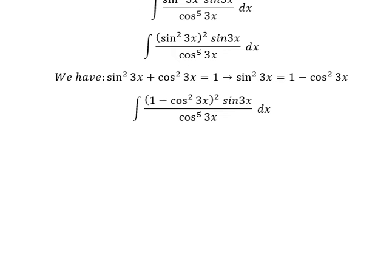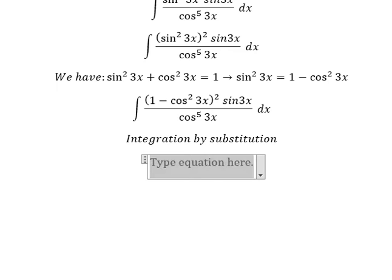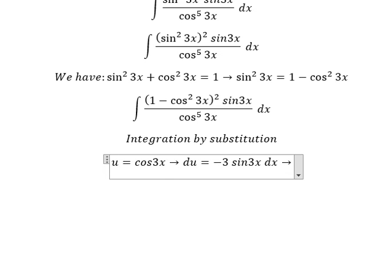Now we need to use integration by substitution. I will put u equal to cos(3x). We need to differentiate both sides, so we have du = -3sin(3x)dx. Since we don't have negative 3 here, we need to divide both sides by negative 3.